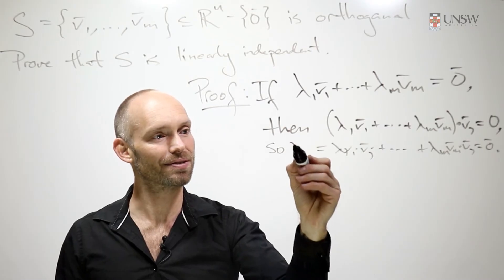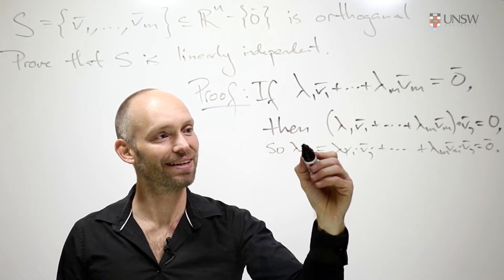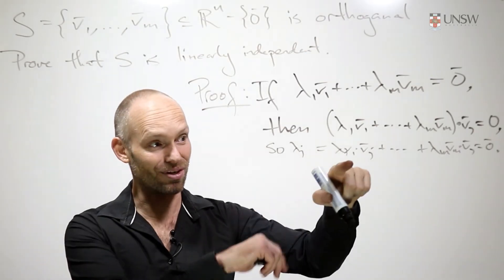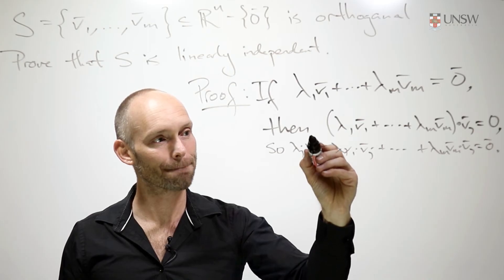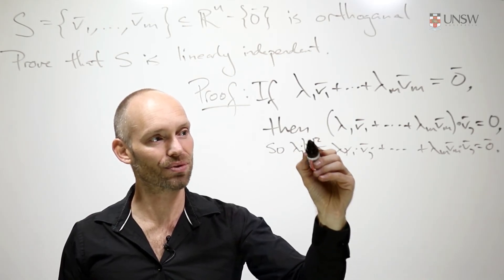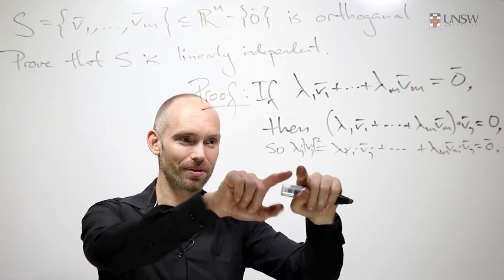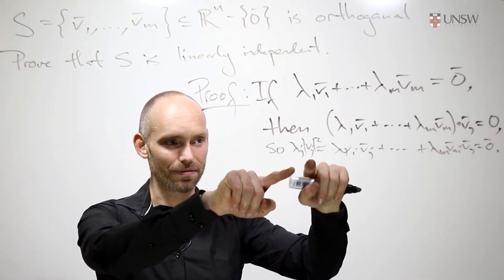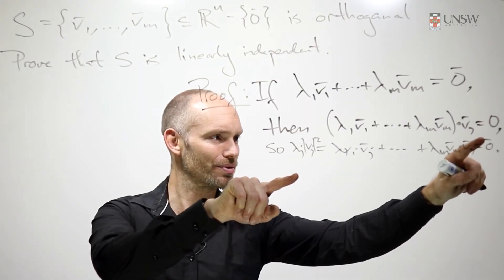So we can write that. So λ_j times v_j dotted with itself, which is the length of v_j squared. So if you look at what we've got here, we've got λ_j times the length of v_j squared is equal to zero.